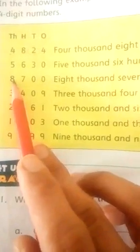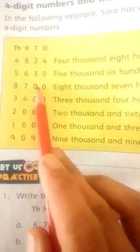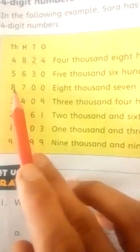5630. 8700. Now look at this one, there are no tens shown here, so we will simply write it: 8700, eight thousand seven hundred.